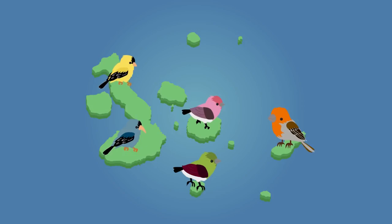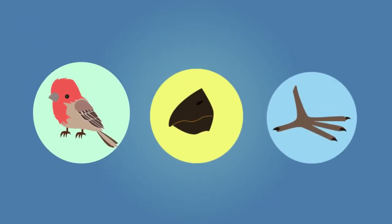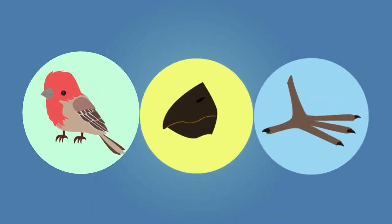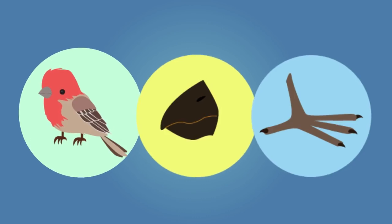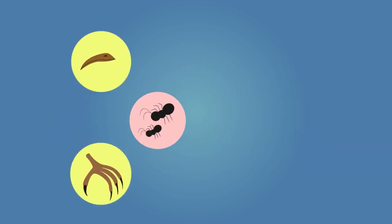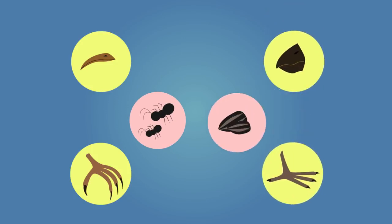The finches on each island showed distinct variations in their overall size, beak shape, and claw size. These differences were attributed to the differing food sources available on the various islands of the Galapagos. Some of the birds had long thin beaks and sharp claws suited to catching and eating insects, while others had large powerful beaks suitable for cracking open nuts.